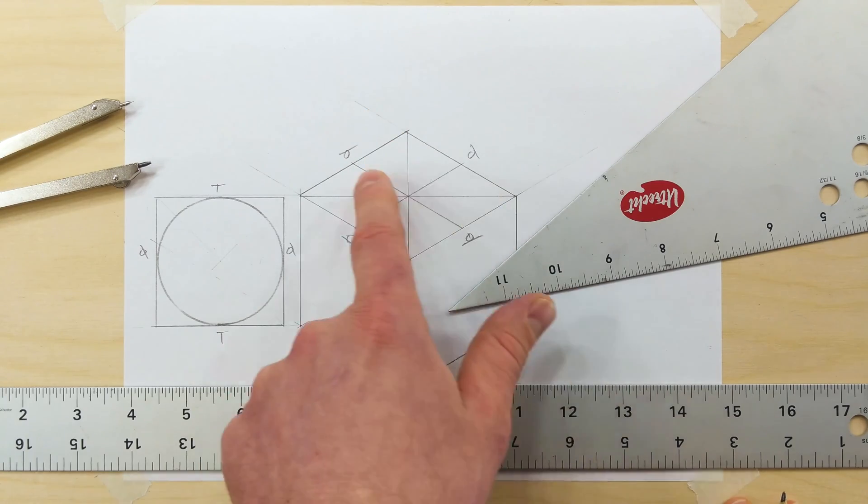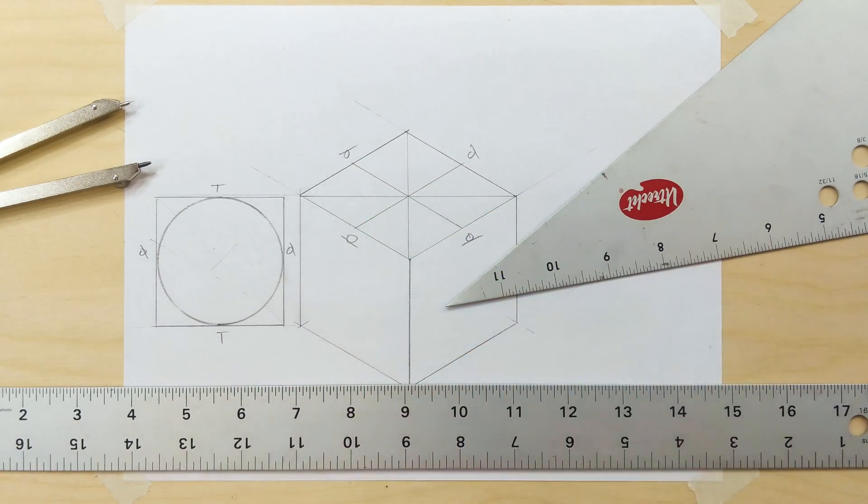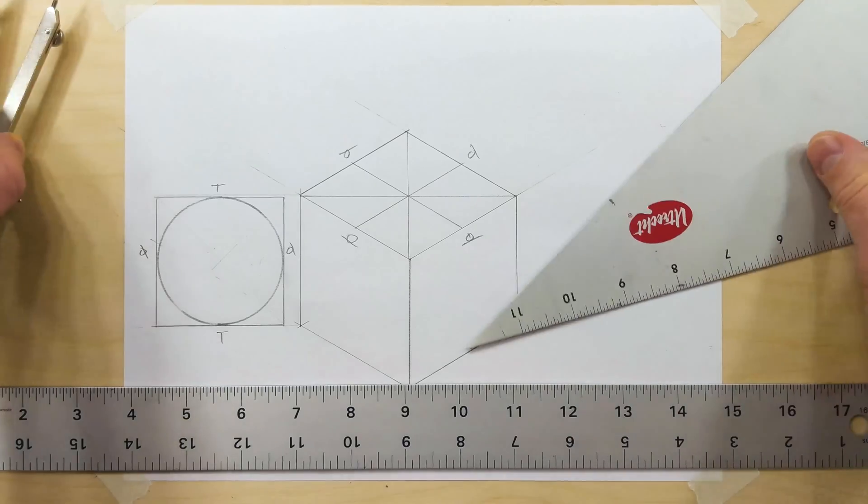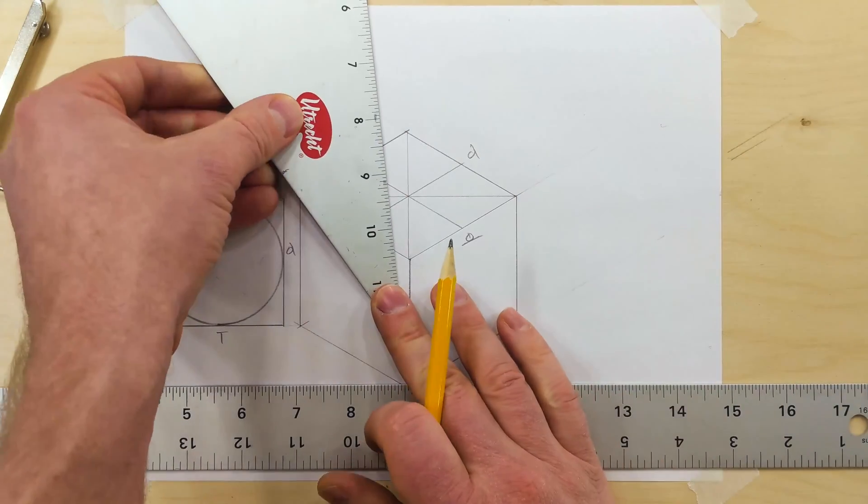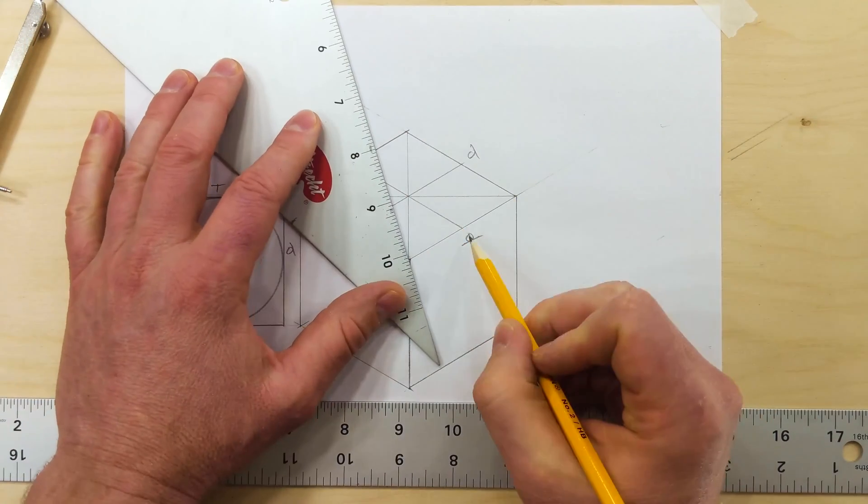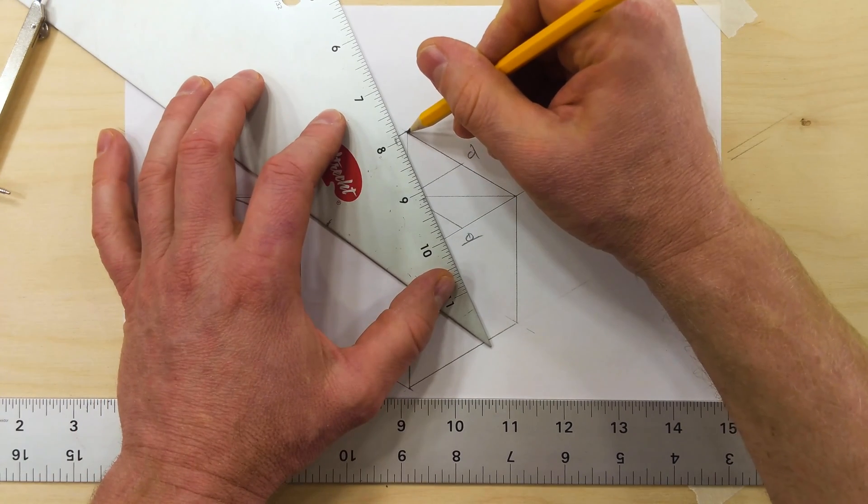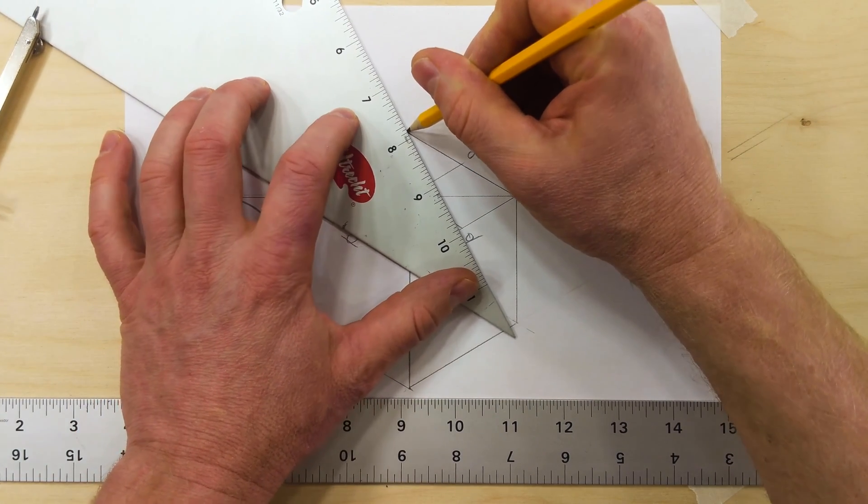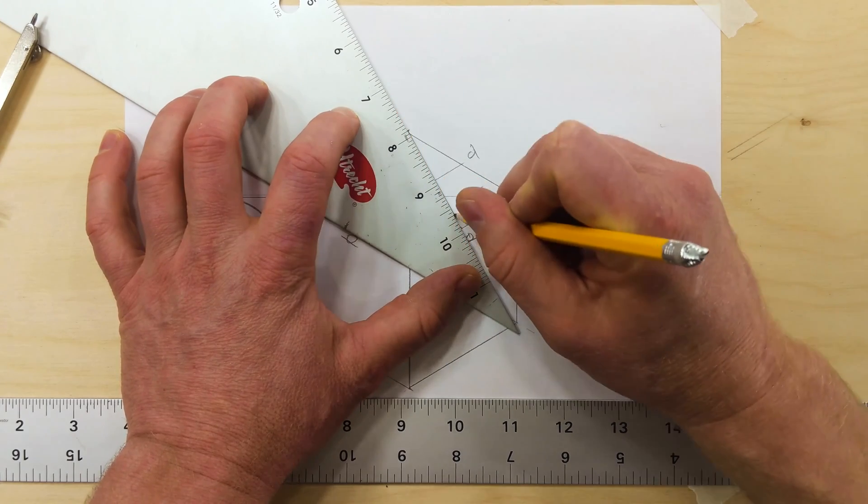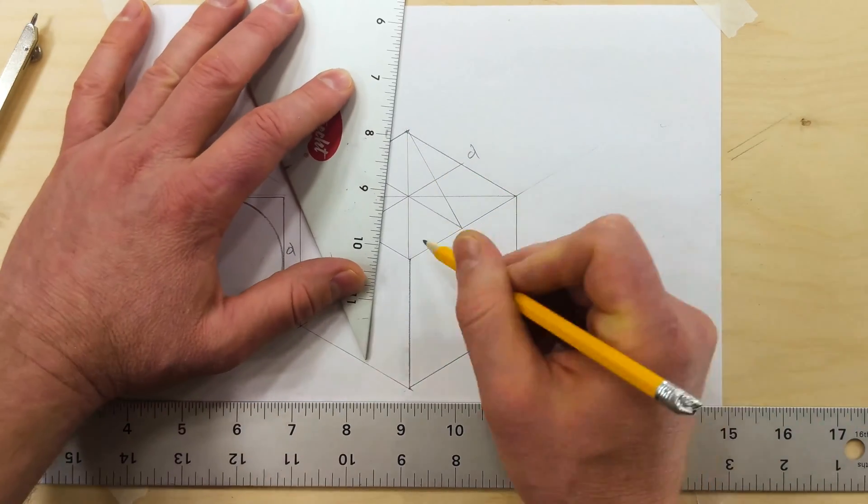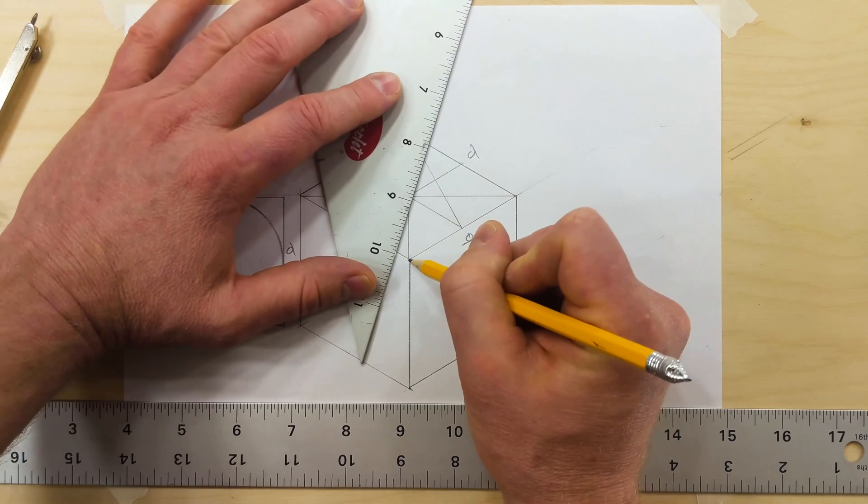The next thing we need to do is find the center points of this arc. To do that, we take our straight edge and we draw from our tangent point to the far corner. Put your pencil at the far corner and then draw to the tangent point. Then we do it for the other tangent point to this corner.